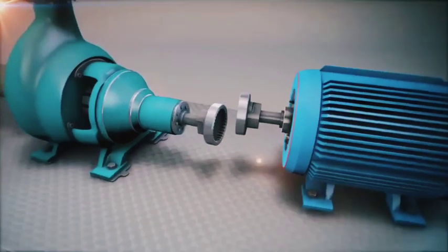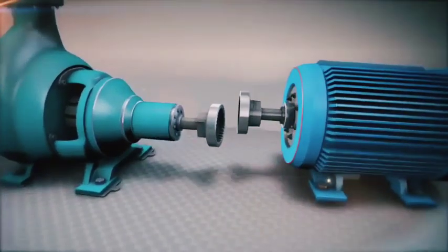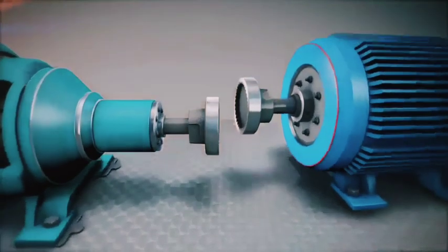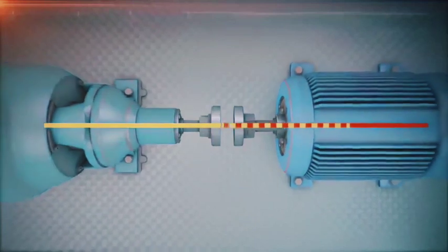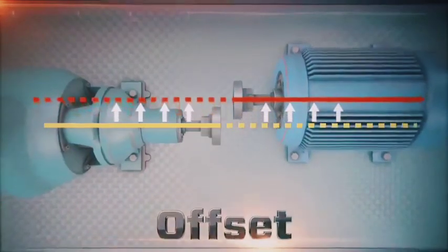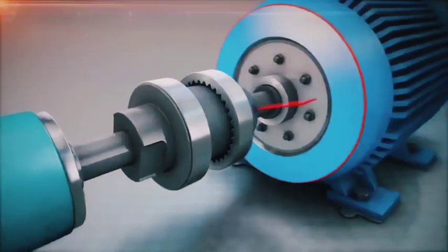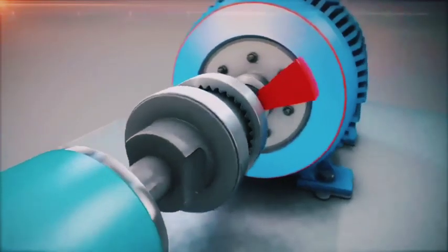Typically, the machines will be misaligned in two ways and in two dimensions. Let's visualize this. Both vertical and horizontal directions each have a combination of offset and angular misalignment.